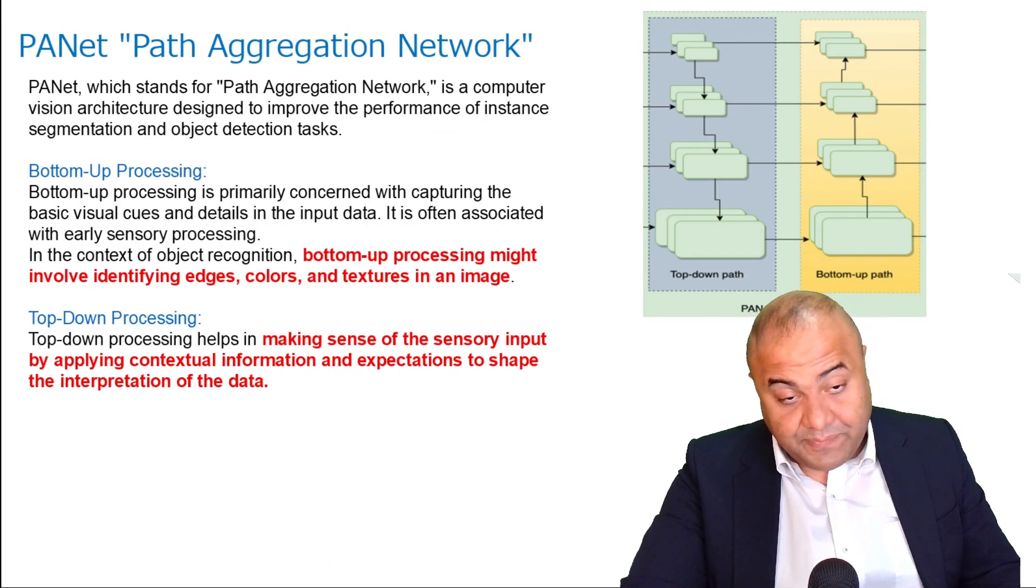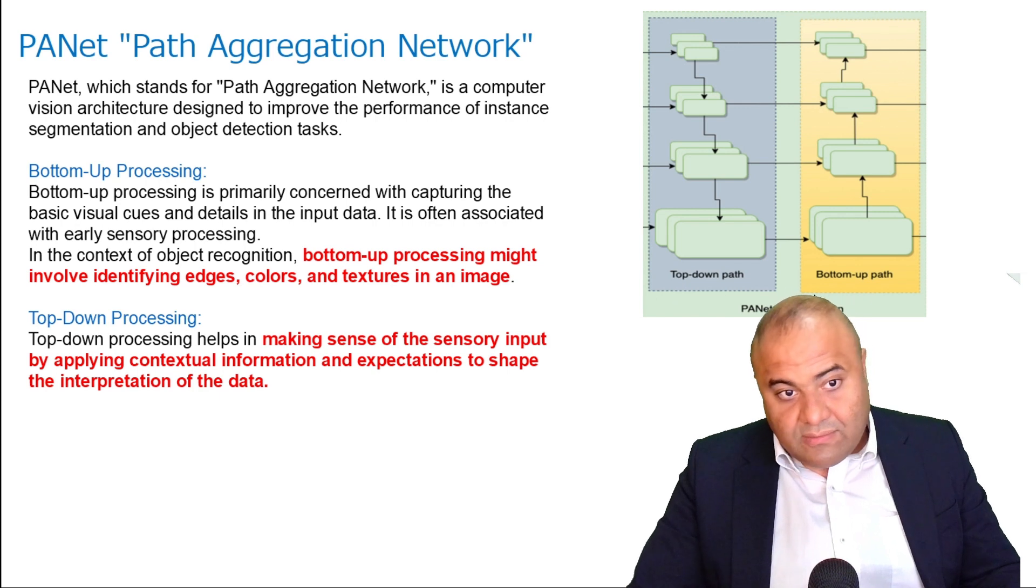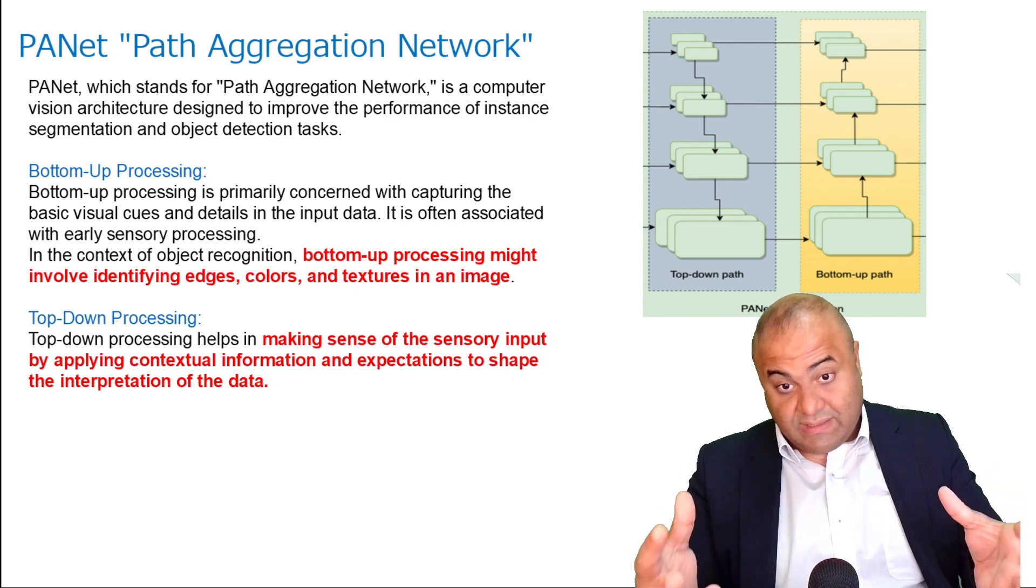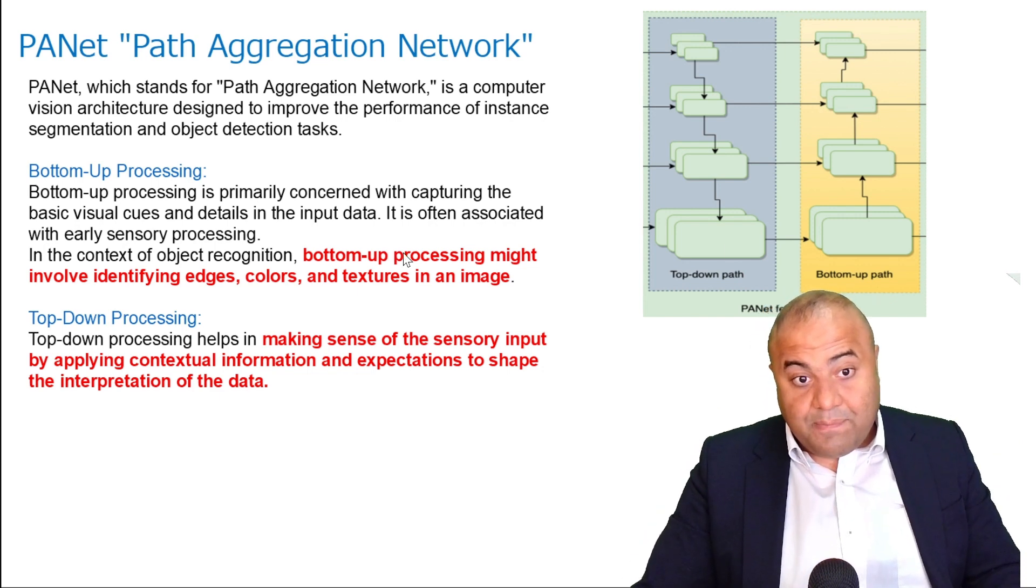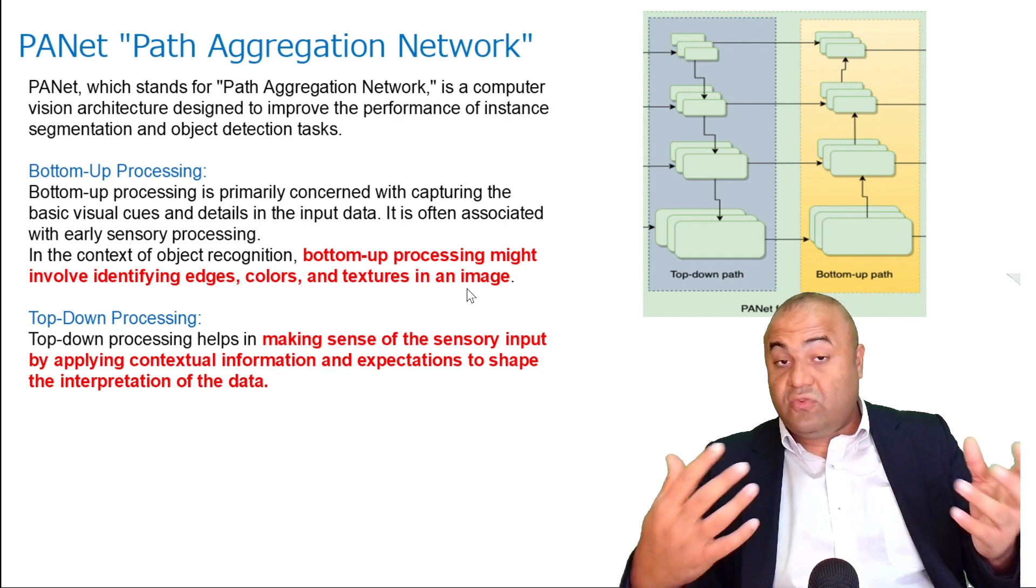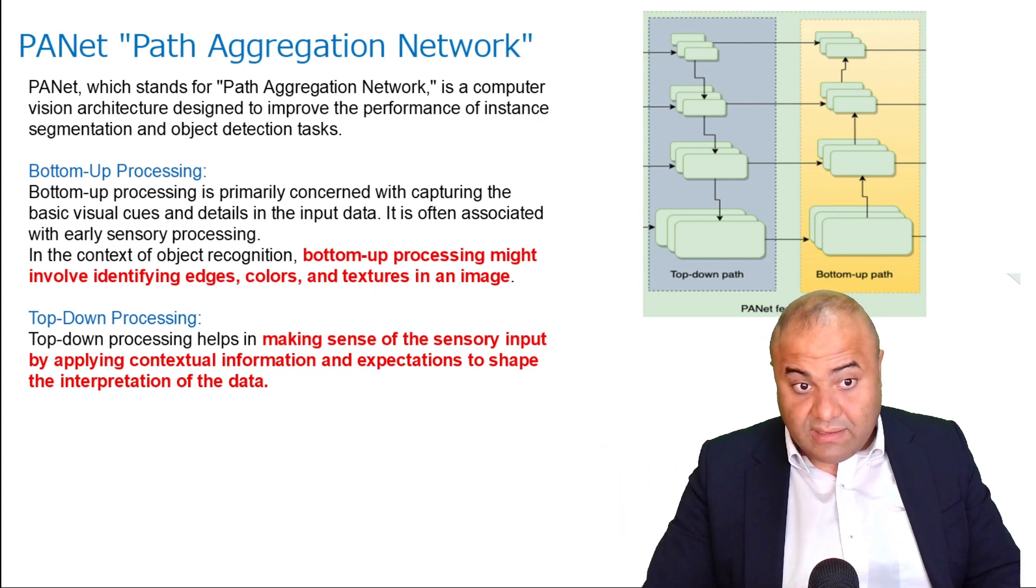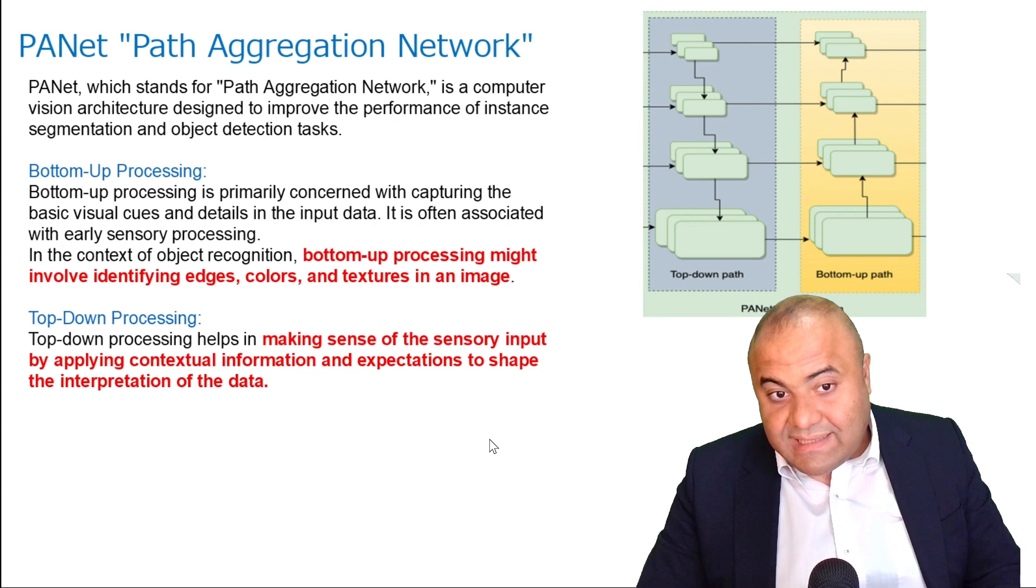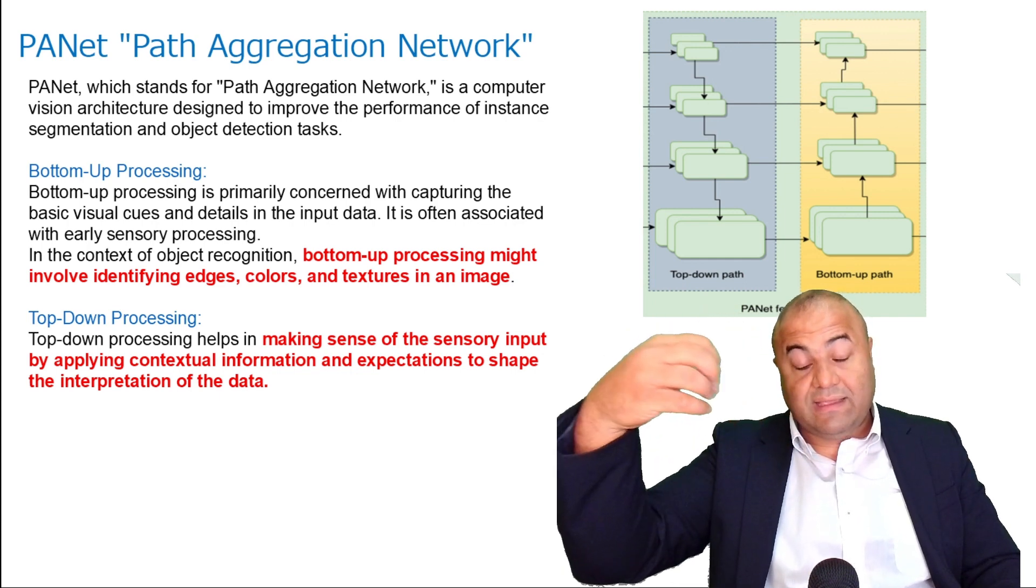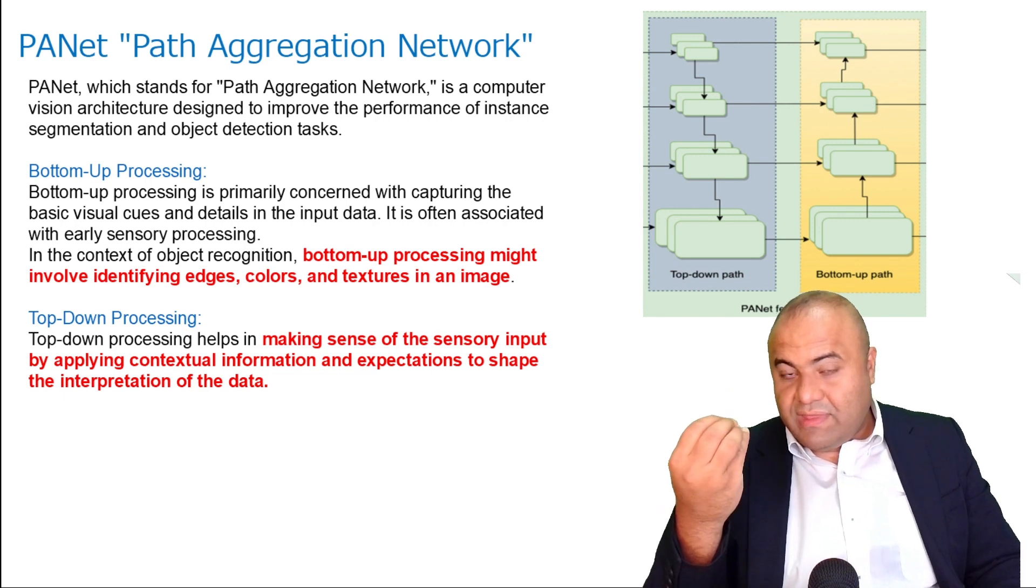One thing is the PANet, Path Aggregation Net, is for the bottom-up path, which is the usual path. Of course, what we can see is the bottom-up path processing might involve identifying edges, colors, texture in an image. This is what the convolutional neural network does. Now, on the other hand, when we do the top-down processing, it provides us a sense of the scenery. So these, as the information propagates, like expands, it can provide us some sense of the scenery itself.